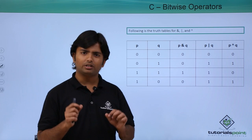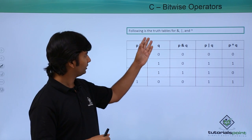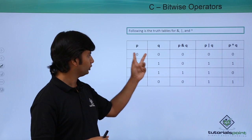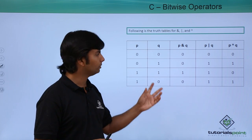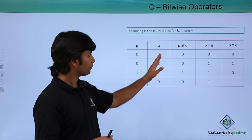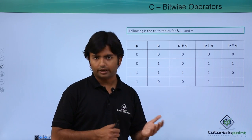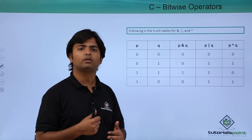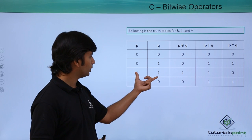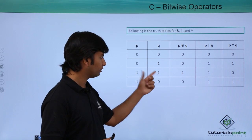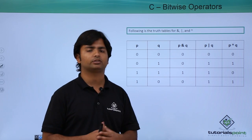When I apply any bitwise operator, it will directly work on those binary bits. So here we have 0 and 1 as the binary values, and p and q are two variables carrying the bits. If I use the AND operator — similar to logical AND — it will return a one only when both bits are one. Otherwise, in all other situations, it will return a zero.